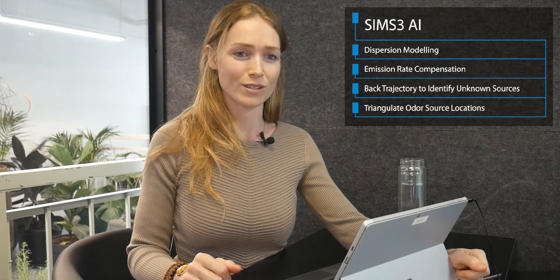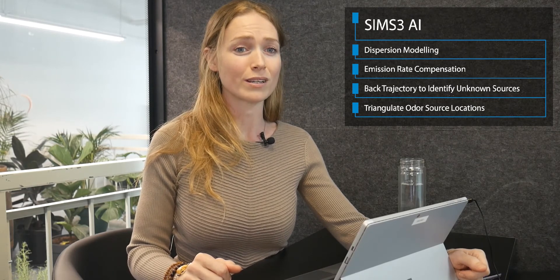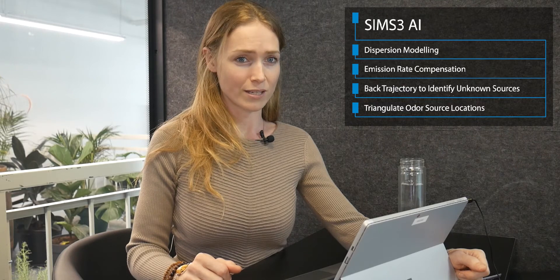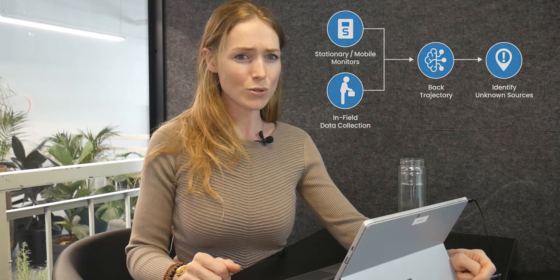The brains of SIMS 3 utilizes an impressive and powerful logic. AI compares estimated odor levels from dispersion modeling to the actual measurements collected with odor monitoring equipment, and adjusts and updates emission rates of all sources to compensate. Ground level readings are used by SIMS 3 to conduct back trajectory to identify unknown sources. Continuous pollution data and field olfactometric data are used with meteorological data to triangulate the exact location of an odor source. Our software conducts these back trajectory and emission rate estimates every 10 minutes.